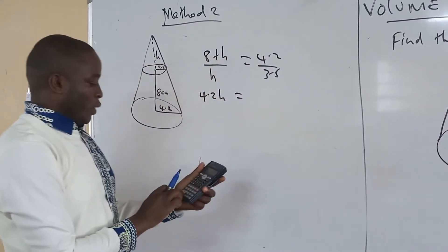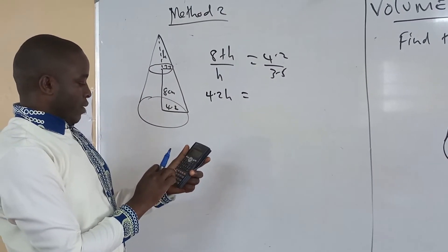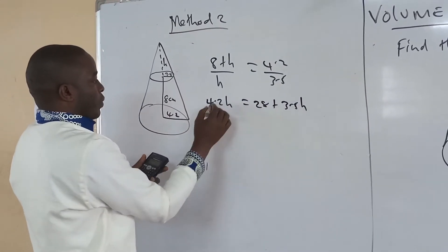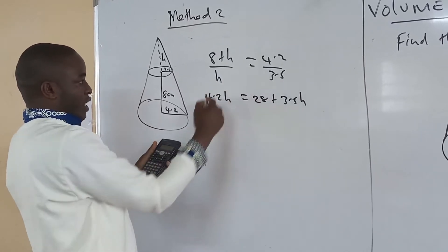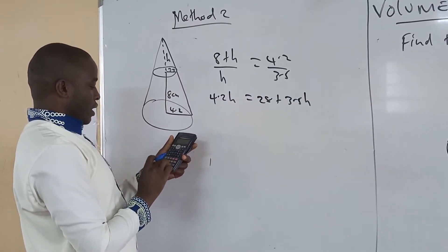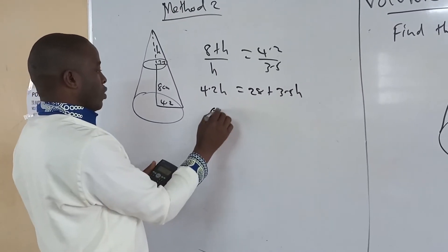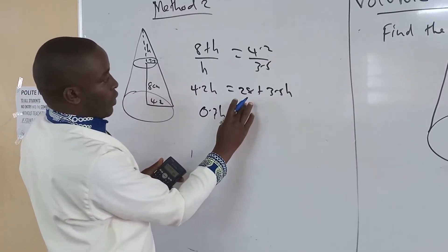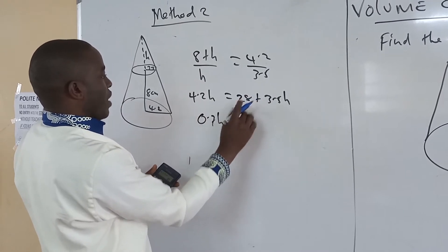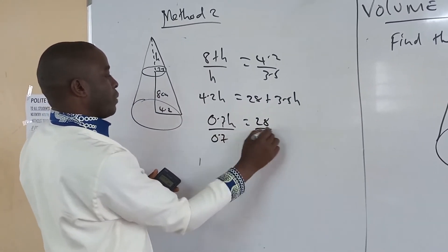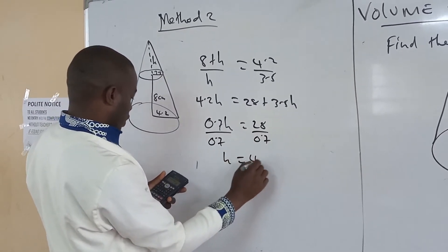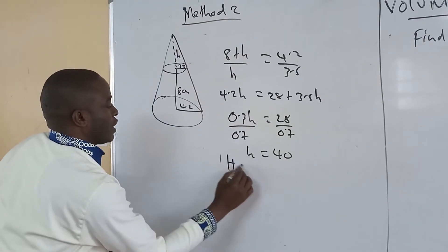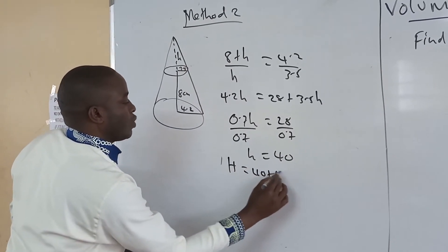That gives us 3.5 times 8 = 28 plus 3.5e. Bringing terms together: 4.2e minus 3.5e equals 28, so 0.7e equals 28. Dividing by 0.7, we get e equals 40. So the extended height is 40, which means the total height of the full large cone becomes 40 plus 8, which equals 48.